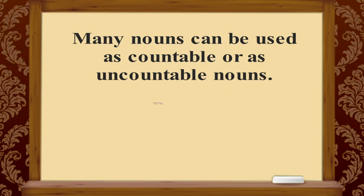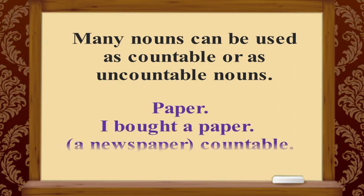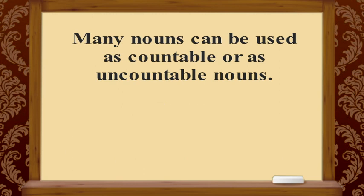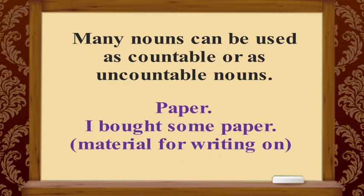Many nouns can be used as uncountable or as countable nouns. For example, the word 'paper' can be both countable and uncountable. 'I bought a paper' means a newspaper, which is countable. 'I bought some paper' means material for writing on, which is uncountable.